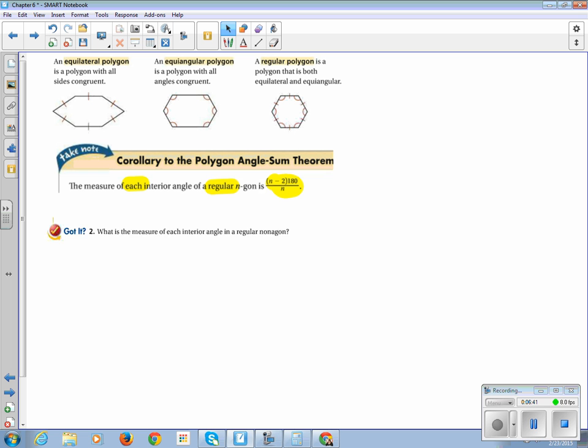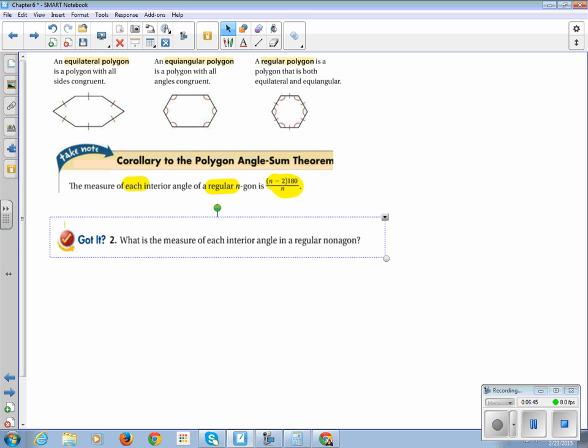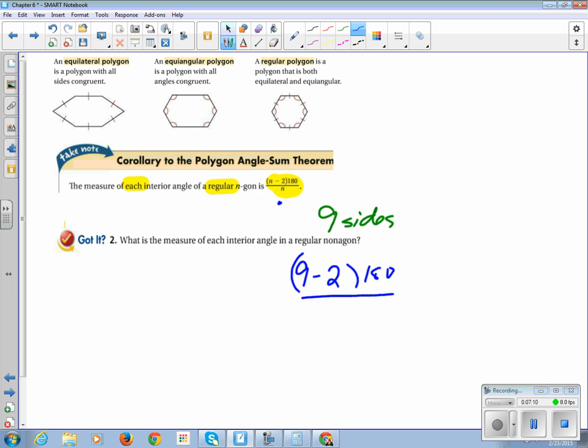So if we look here, what is the measure of each interior angle in a regular nonagon? I happen to know nonagon has nine sides. If you don't know, what can you do to find out? You can Google it, or look it up in your glossary in your textbook. So nine sides. So we're going to take our formula here. We're going to put 9 in for n. 9 minus 2 is 7. I know 180 divided by 9 is 20, and 7 times 20 is 140. So each angle is 140 degrees.